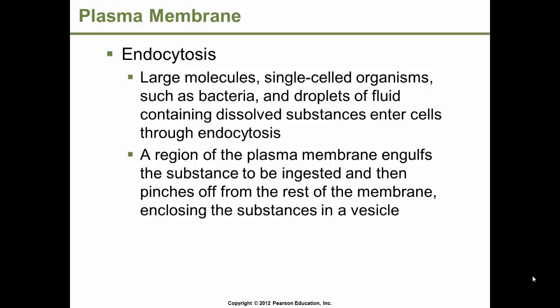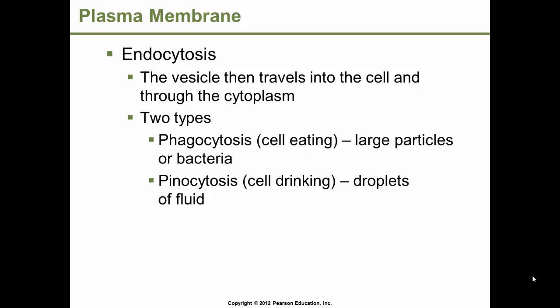Endocytosis is a process in which large molecules, single-celled organisms such as bacteria, and droplets of fluid containing dissolved substances enter our cells — bringing it inside. A region of the plasma membrane will engulf the substance to be ingested and then pinch off from the rest of the membrane, enclosing the substances in a vesicle. A vesicle is a term given to a component used for movement. In endocytosis, the vesicle is going to travel into the cell and through the cytoplasm.